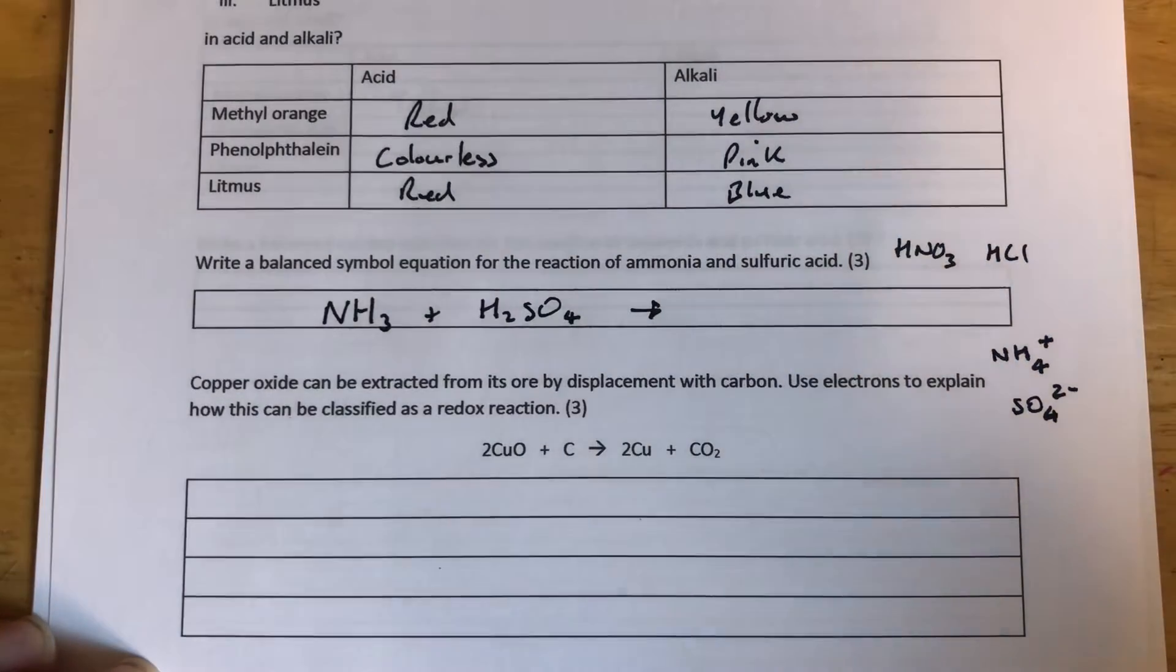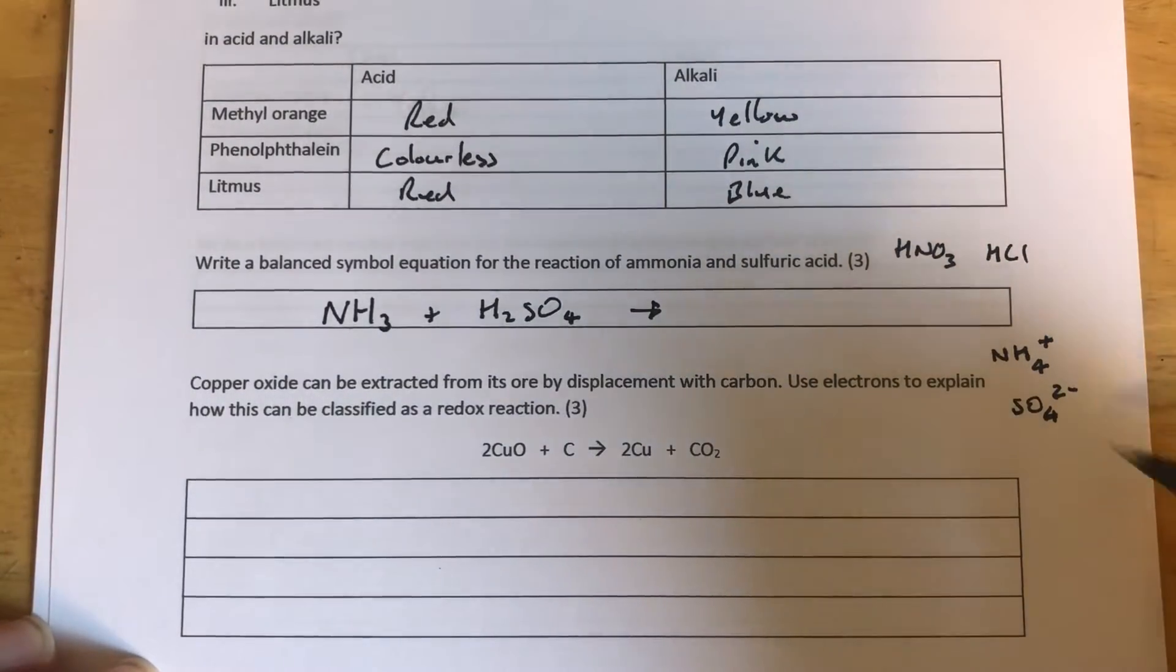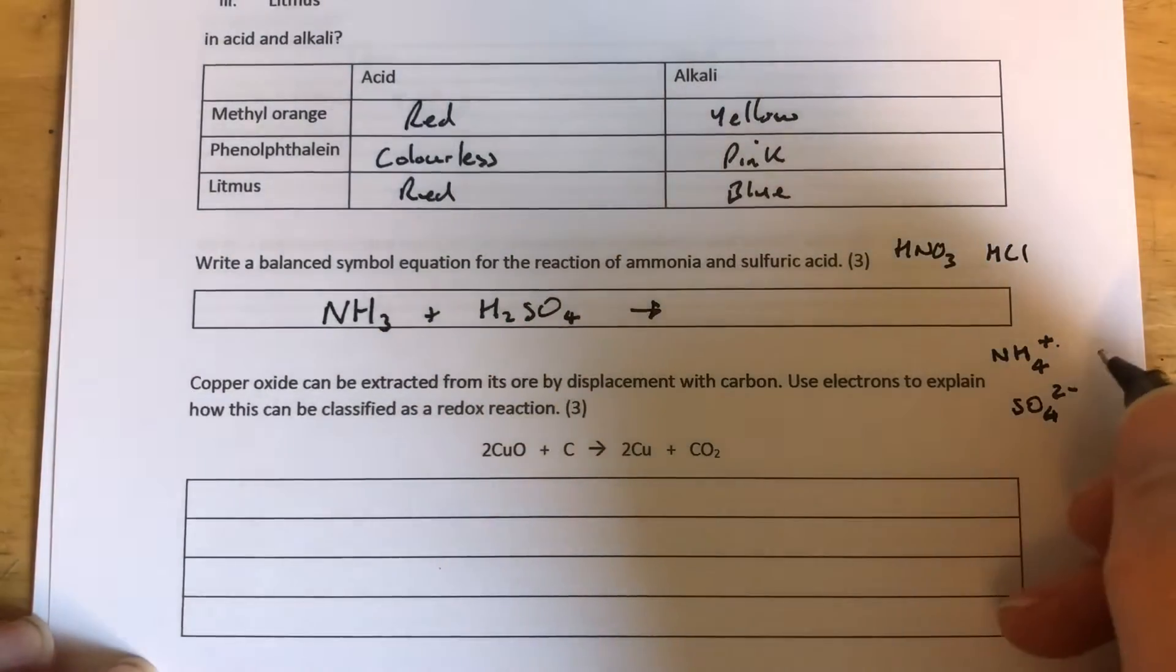To come up with the formula of ammonium sulfate, we need the positive and negative charges to be equal but opposite. Right now, they're not equal. There's one positive and two negatives, so we're going to need another ammonium ion, NH4+.